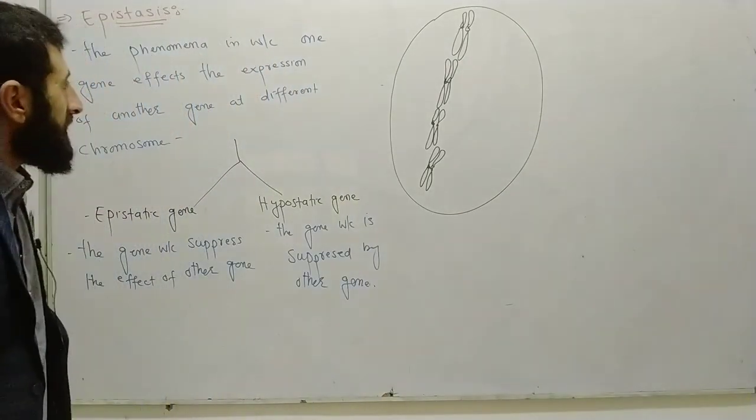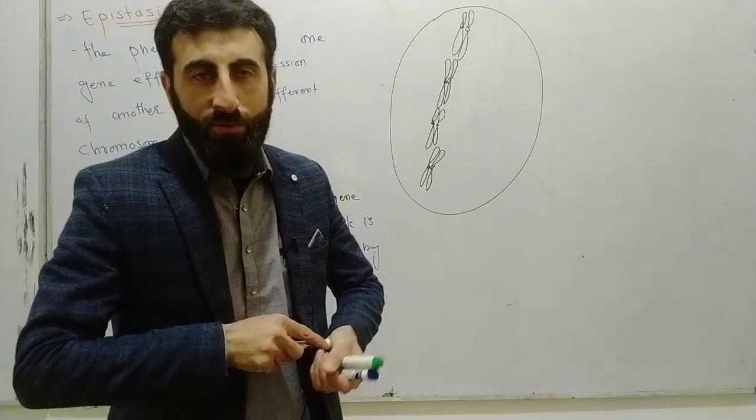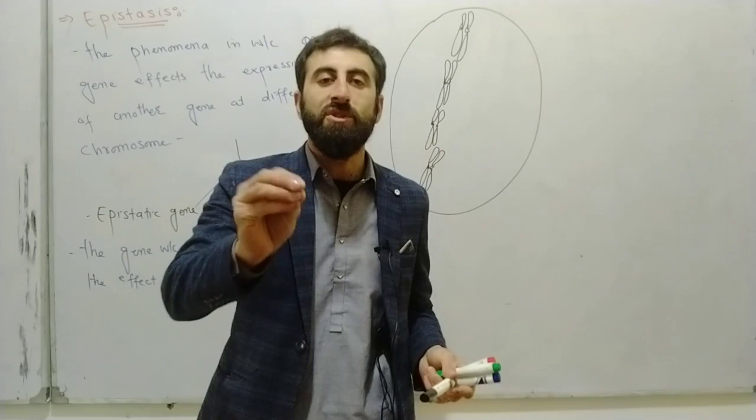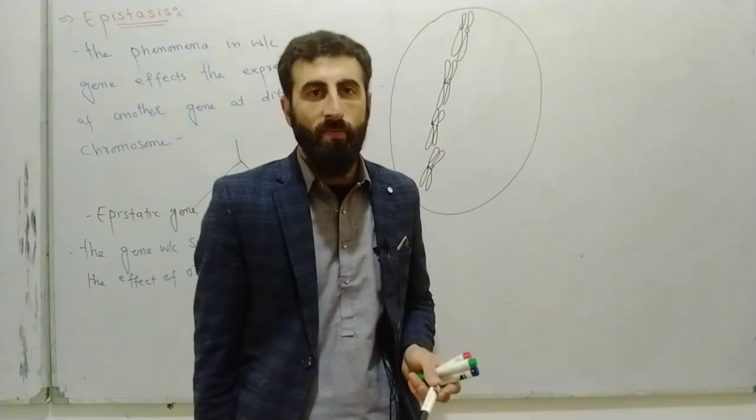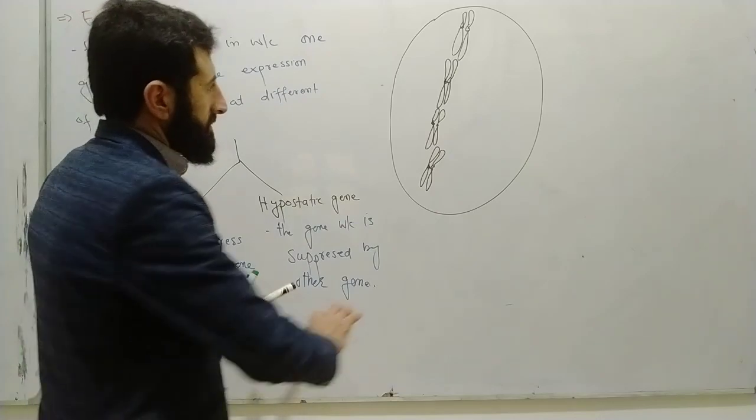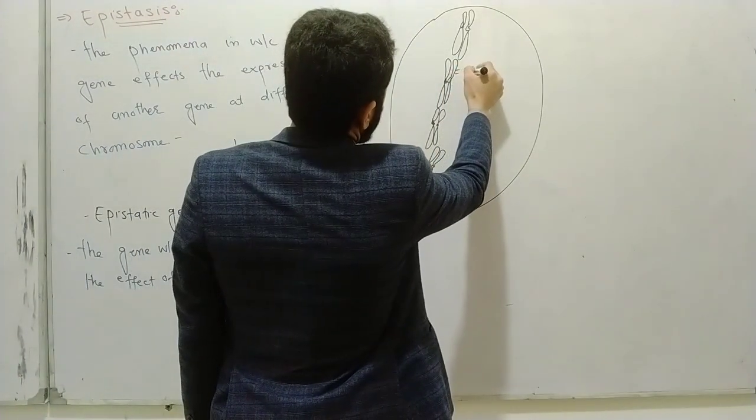Now, a chromosome contains genes. One chromosome's gene can cancel out another chromosome's gene effect. Let me give you an example. One gene is on chromosome number nine.